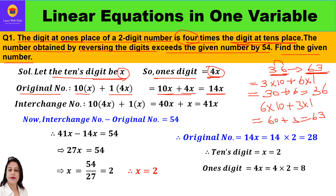Now we need to find the interchange number by reversing the digits. The one's digit 4x is now multiplied by 10, and the tens digit x is multiplied by 1, giving 40x + x = 41x. Just as 36 became 63, the original number 14x becomes the interchange number 41x.